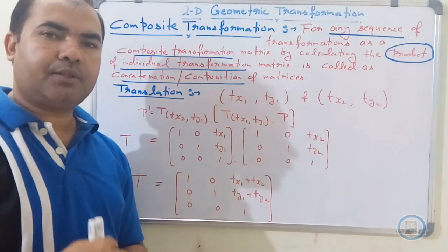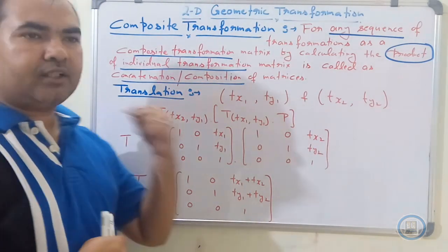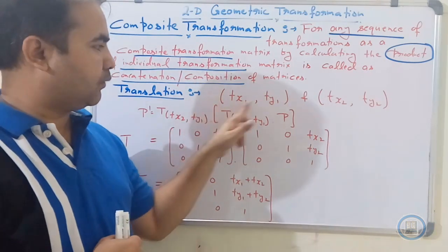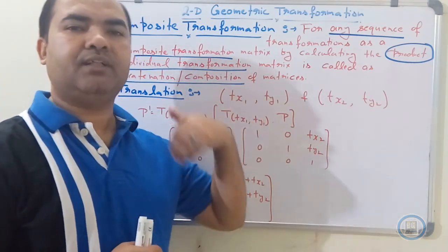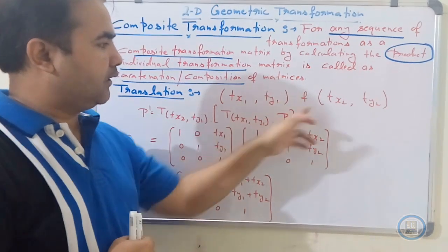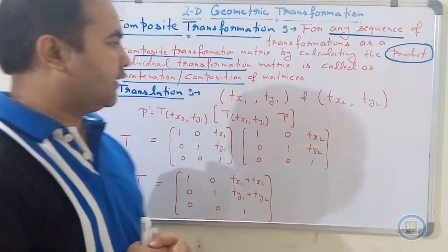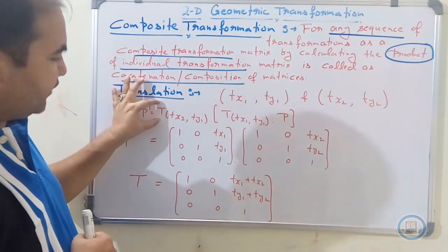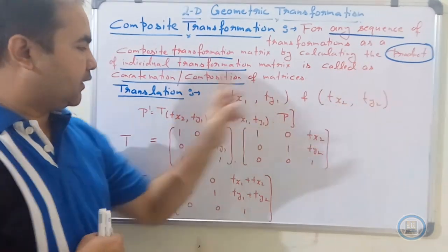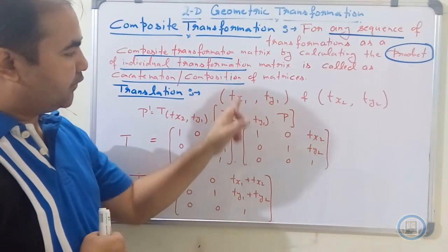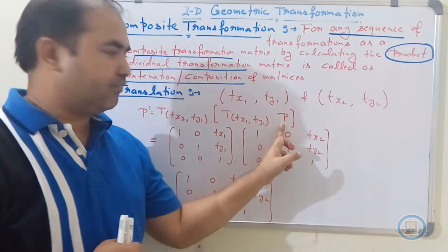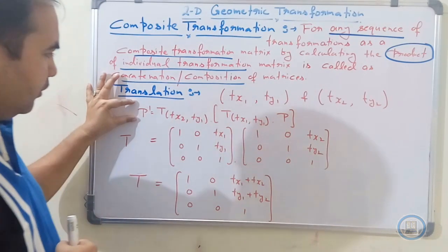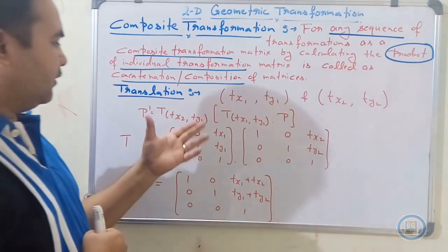The first operation we will discuss is translation. Suppose for a single object we are applying translation two times: the first translation factor is tx1 and ty1, and the second translation factor is tx2 and ty2. We can write the matrix operation as: P-dash equals T(tx2, ty2) multiplied by T(tx1, ty1) multiplied by the original coordinate matrix P. Because matrix multiplication is associative, we can combine these.